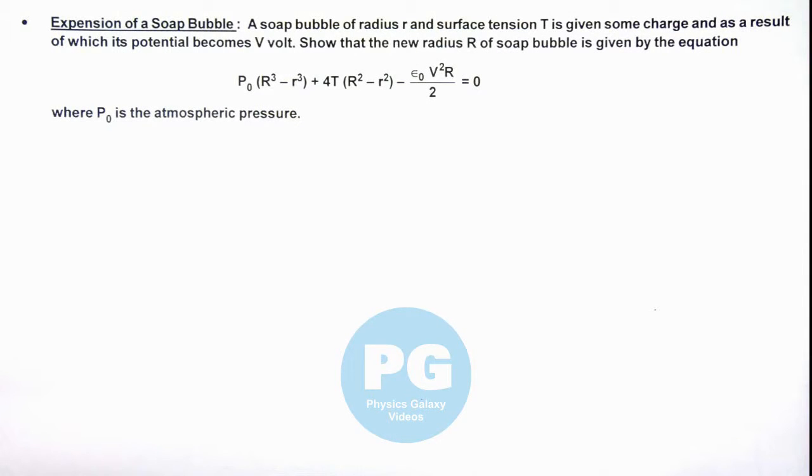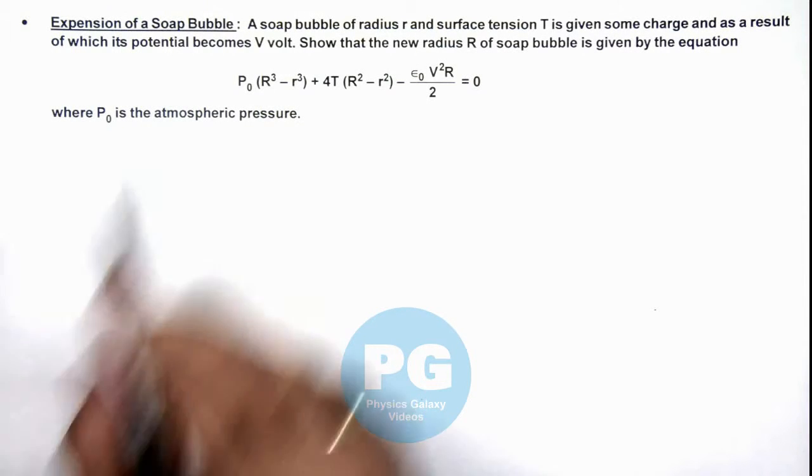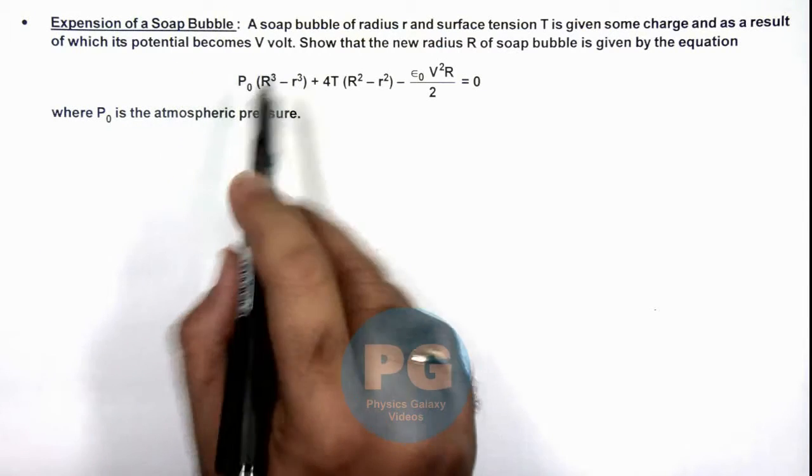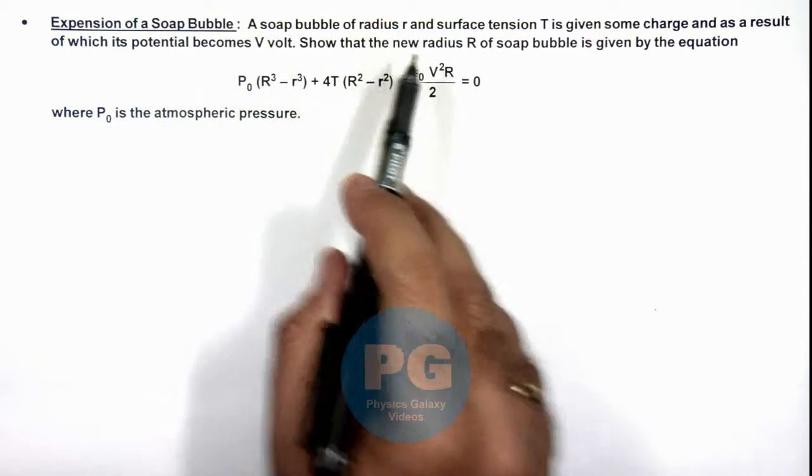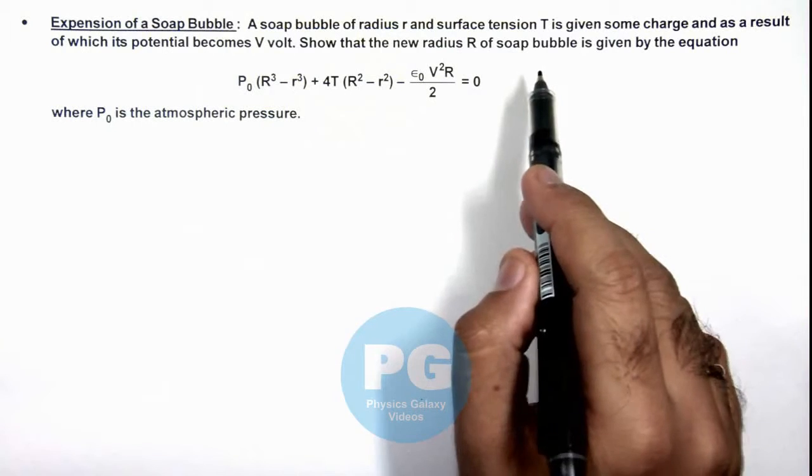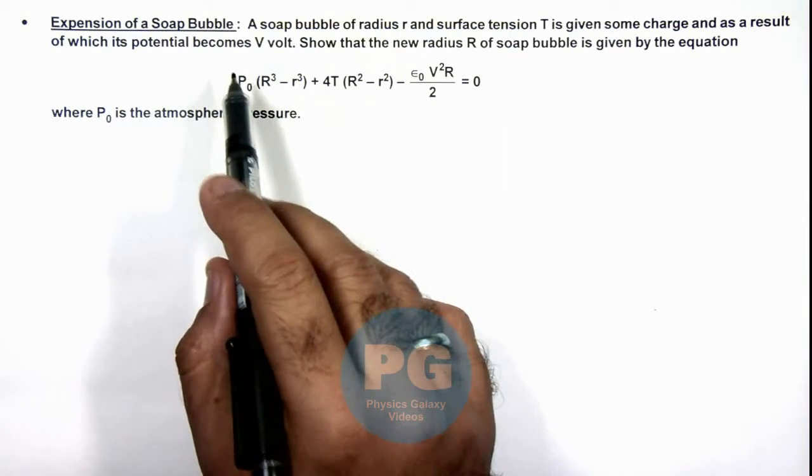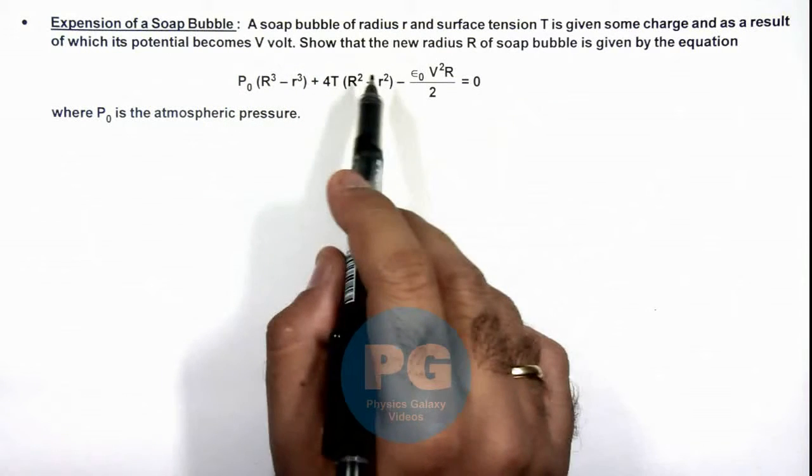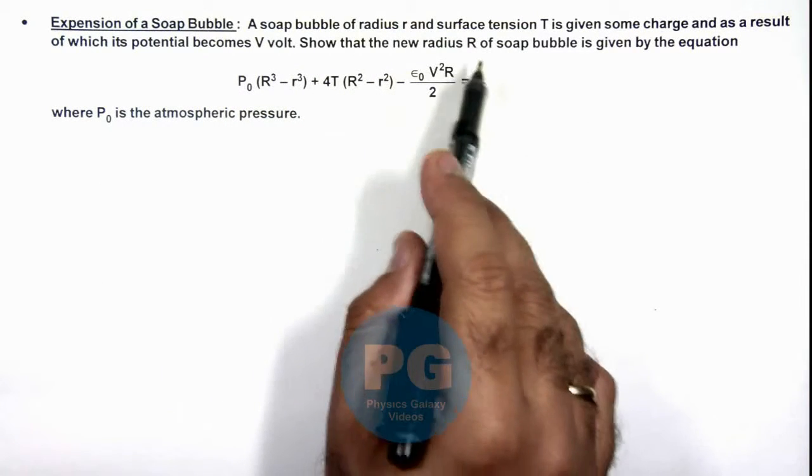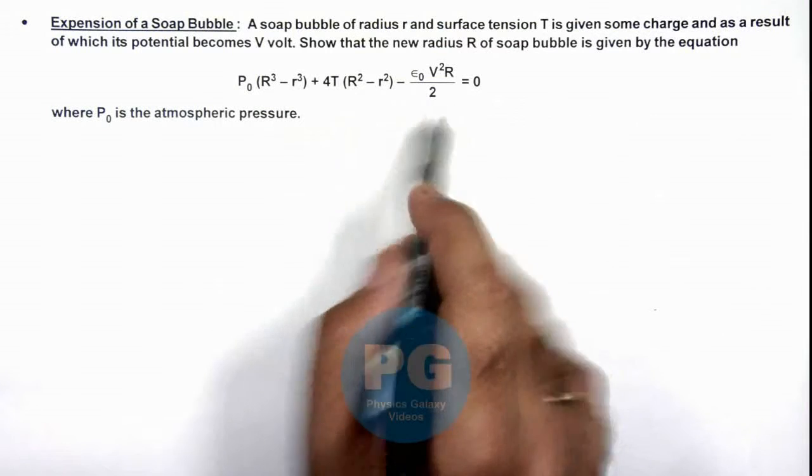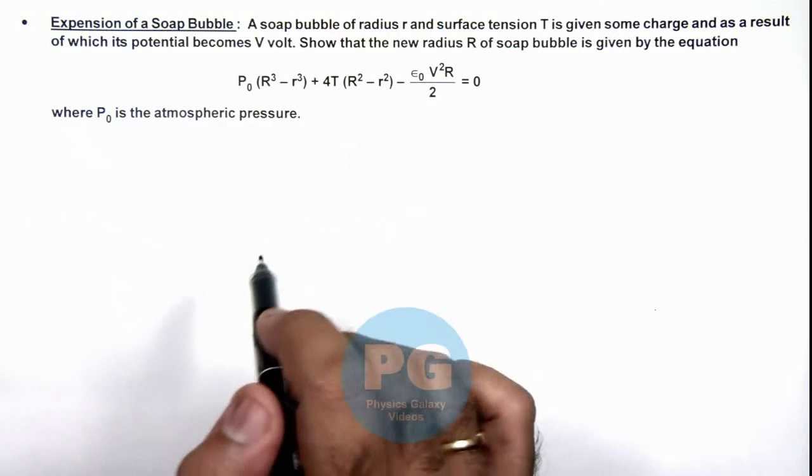In this illustration, we'll analyze the expansion of a soap bubble. Here we are given that a soap bubble of radius r and surface tension T is given some charge, and as a result of which its potential becomes V volt. We are required to show that the new radius capital R of soap bubble is given by this equation, where P₀ is the atmospheric pressure.